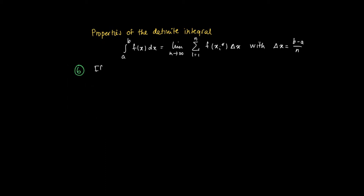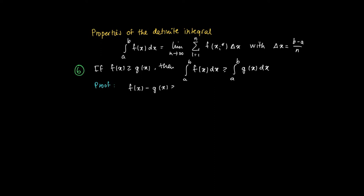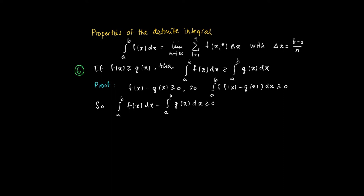If we can compare functions, then we can also compare their definite integrals. So if f(x) is larger than or equal to g(x) on a closed interval a, b, then the definite integral of f is larger than or equal to that of g. We use the former property and look at f(x) minus g(x), which is a non-negative function. The definite integral of f(x) minus g(x) is therefore non-negative, and since the integral of the difference equals the integral of f minus the integral of g, the integral of f is larger than or equal to the integral of g.